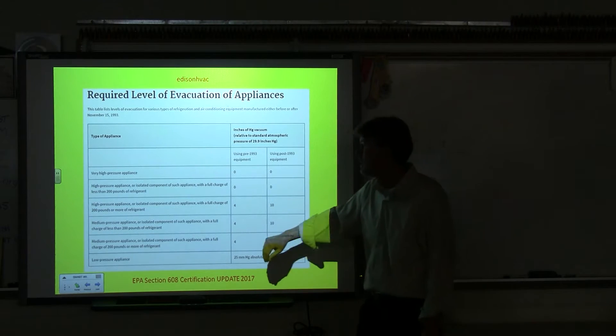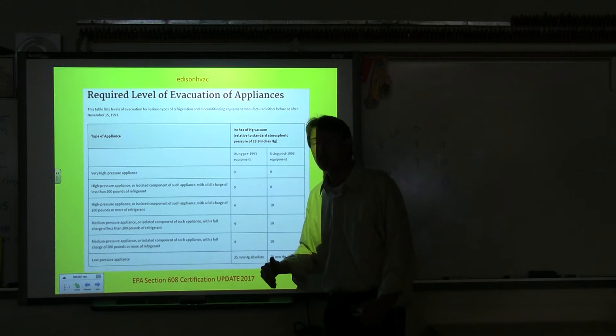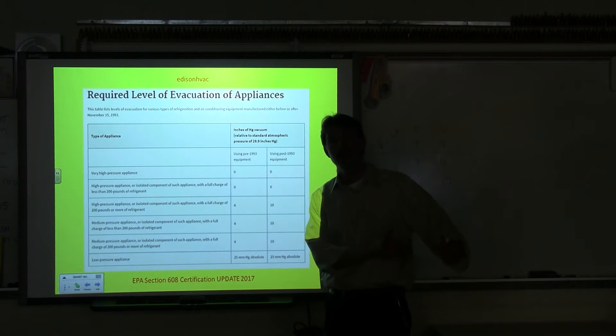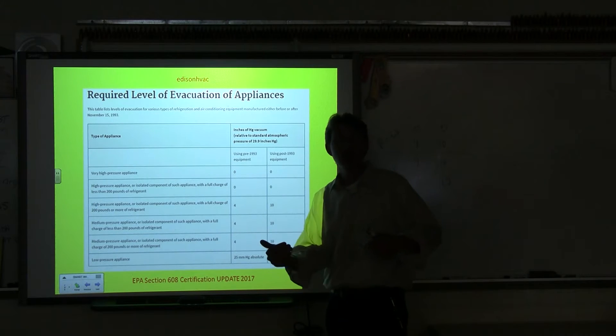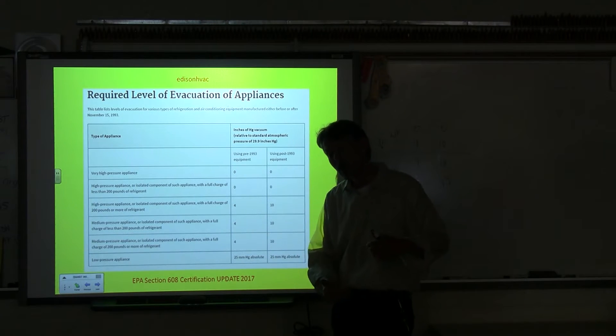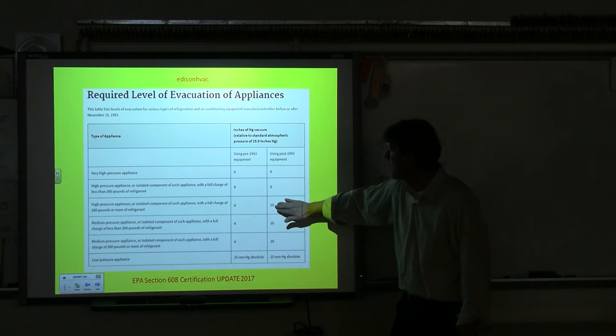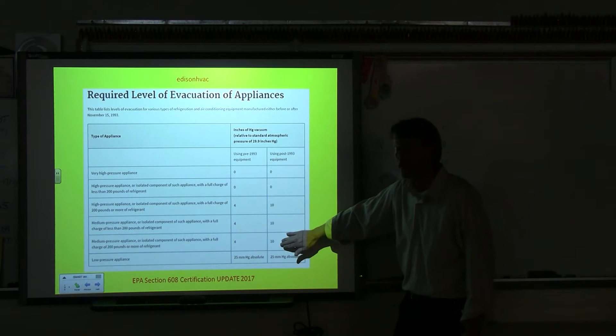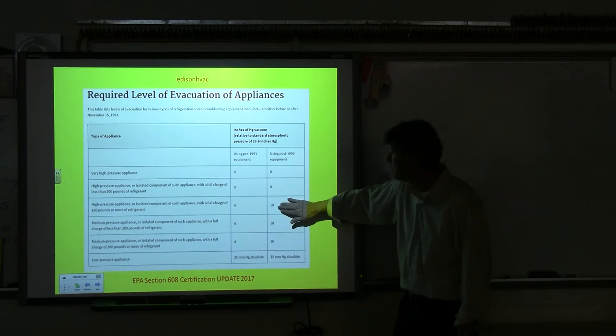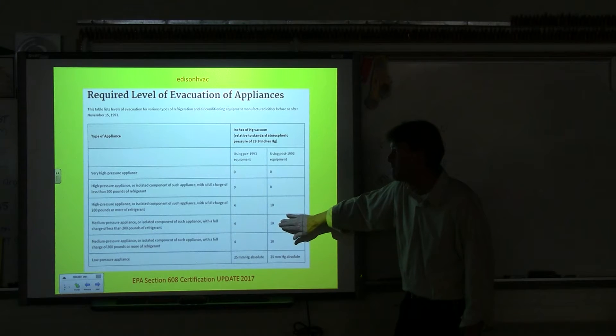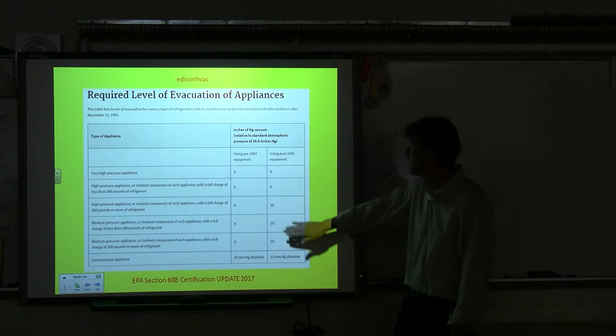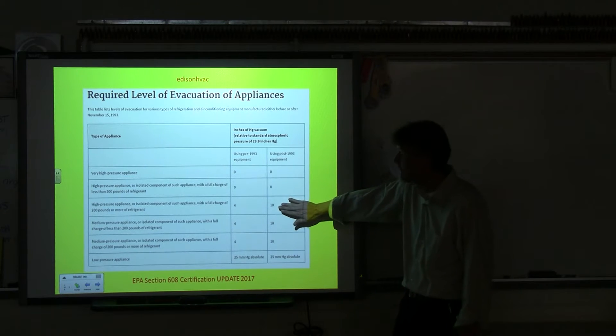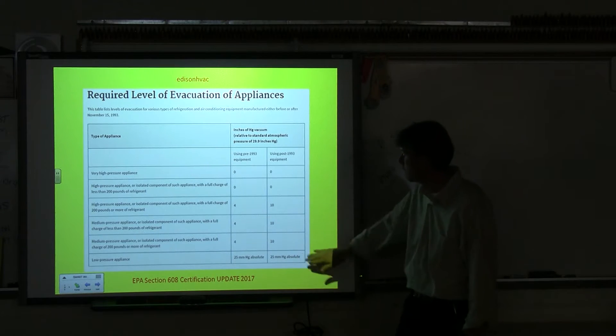But if you're working with commercial equipment, industrial equipment, not only did the leak rate requirements change where it was 15, 35 and now it's 10, 20, 30, this is also changed. So this is 10, 10, 10 for medium. If it has more than 200 pounds of refrigerant, if it has less than 200 pounds and it's medium, and then if it's medium if it has less than 200 pounds. So this one's high pressure if it has more than 200 pounds. So it's the only one that's really changed a little bit.